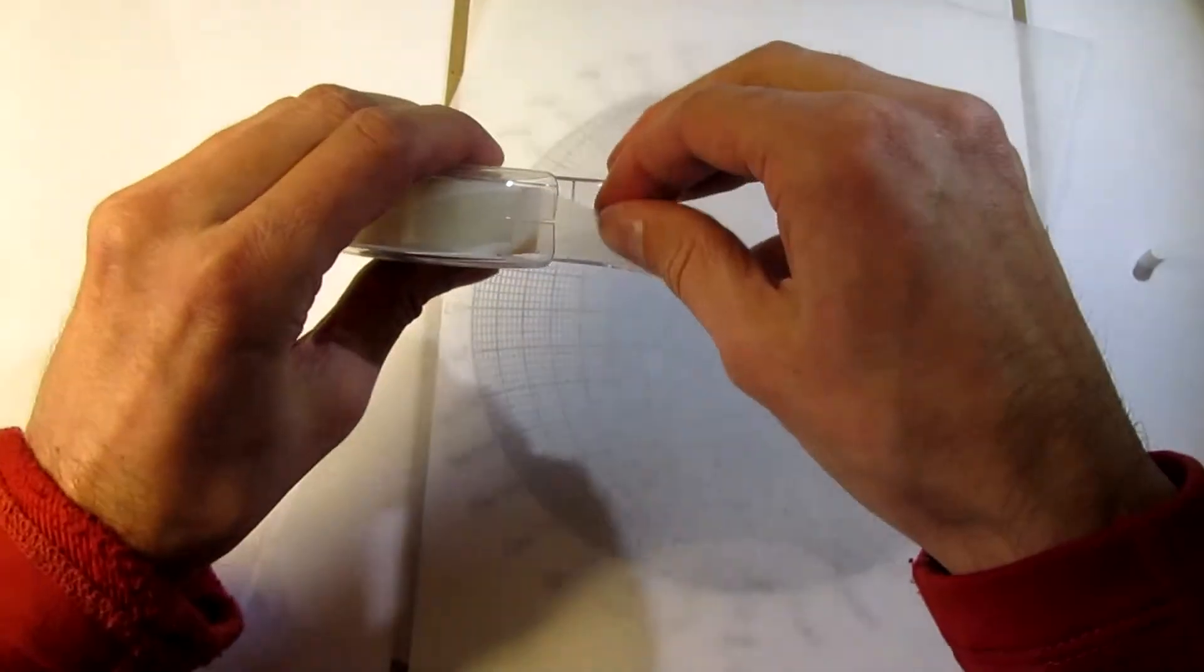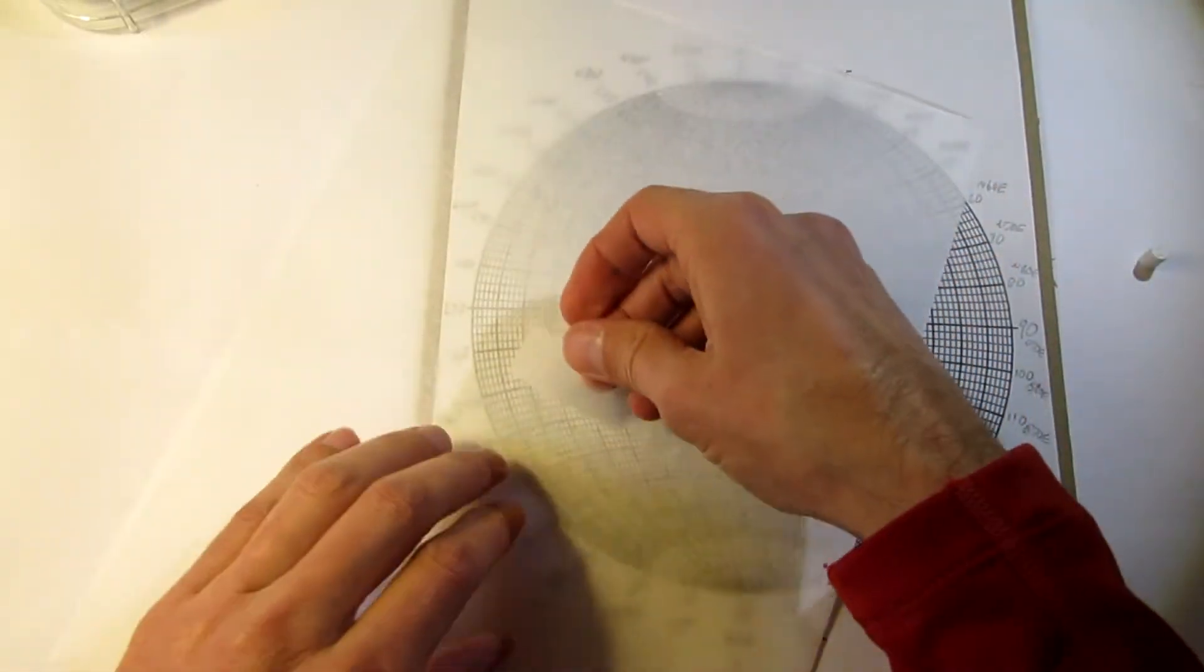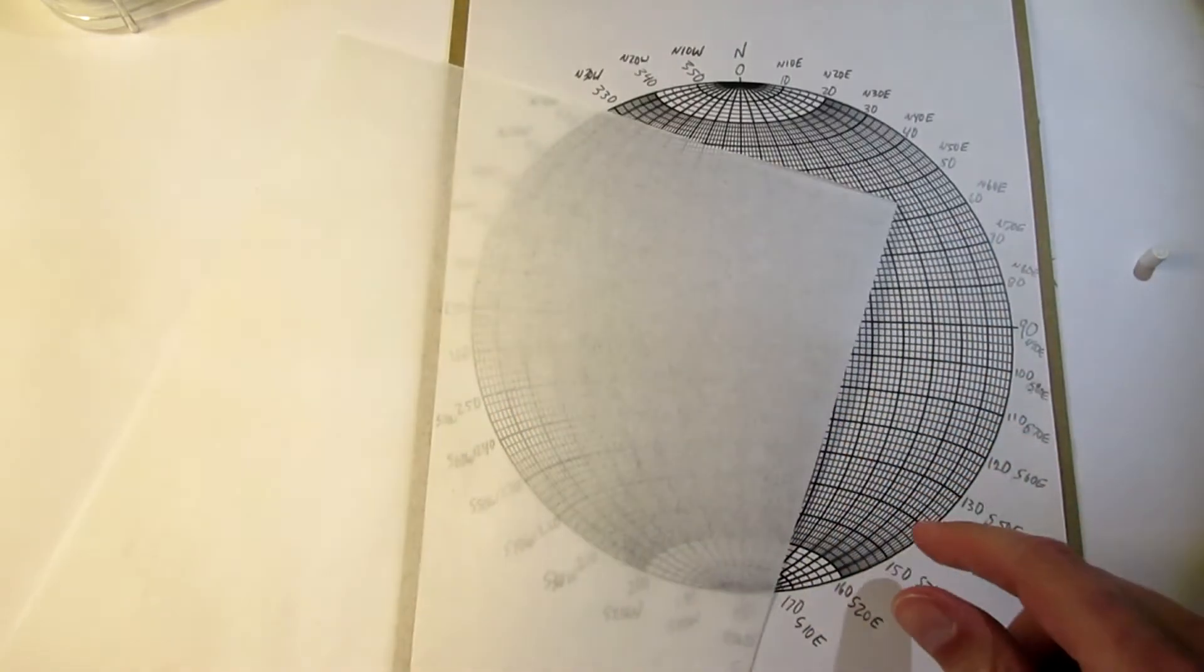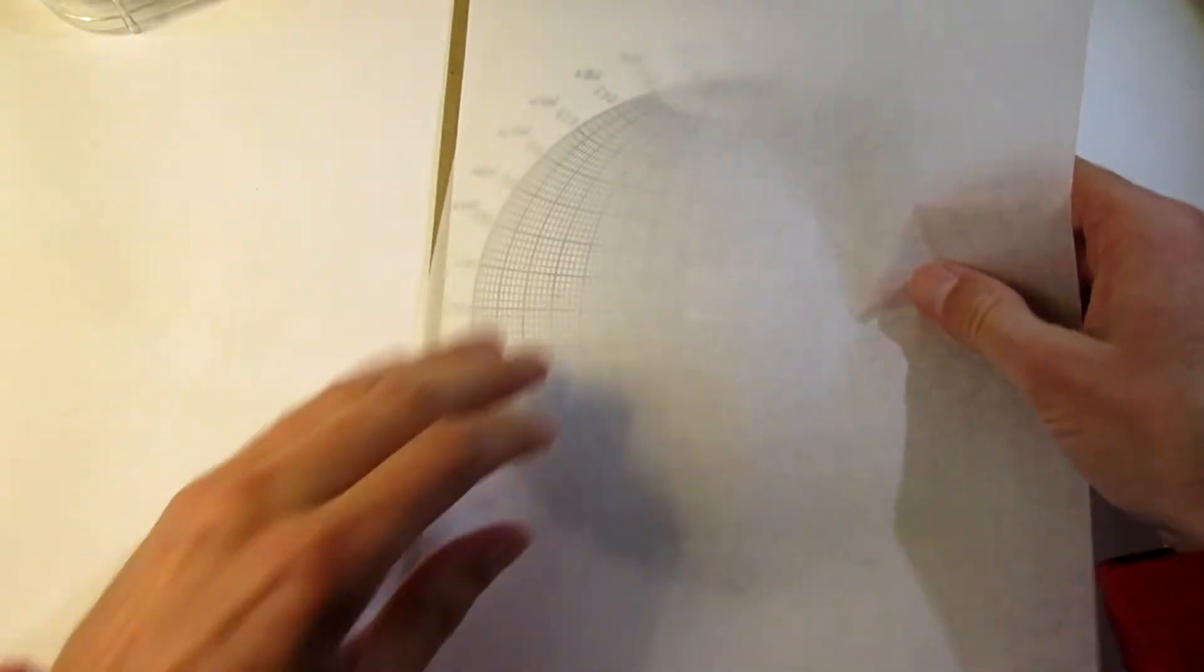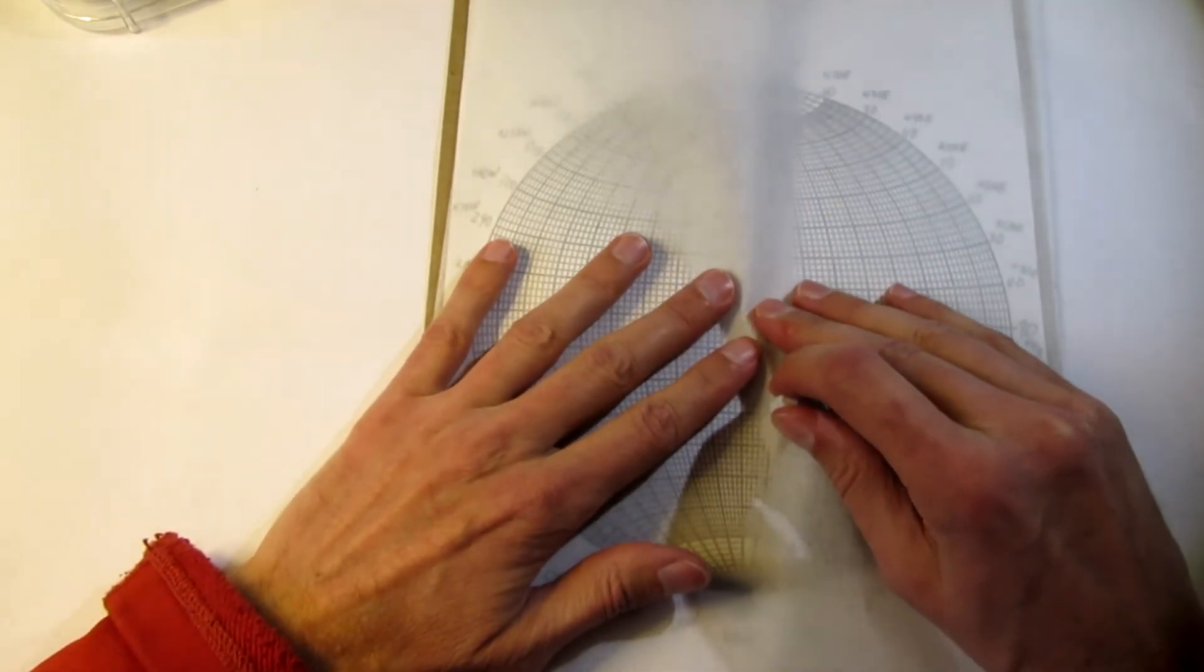And then on the back side of the tracing paper I reinforce it with tape. And then I try to find that same hole again.